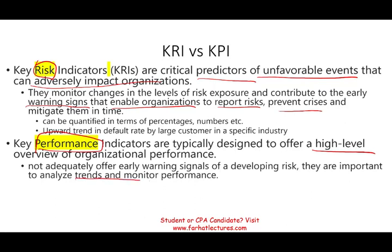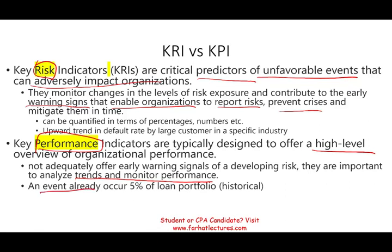KPIs are important for analyzing trends and monitoring performance, but usually after the event has occurred. For example, now you know 5% of your loan portfolio is in default — that's historical data and part of your KPI. But as the default rate is rising in a particular industry, you capture that through a KRI, a Key Risk Indicator. That's the difference between the two — make sure you know it. And that covers all five components of ERM.